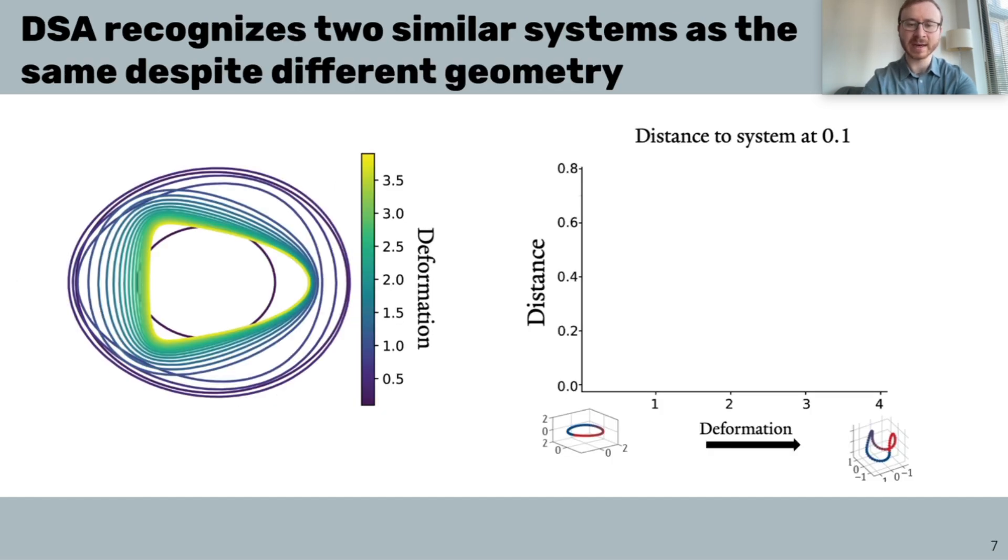So, let's see this in action. We simulate a 100-dimensional ring attractor, which has been experimentally identified in the brain for tracking head direction in both mice and fruit flies. After simulating, we applied a smooth nonlinear deformation, which does not change the ring topology, but increasingly modifies the geometry as the deformation parameter increases.